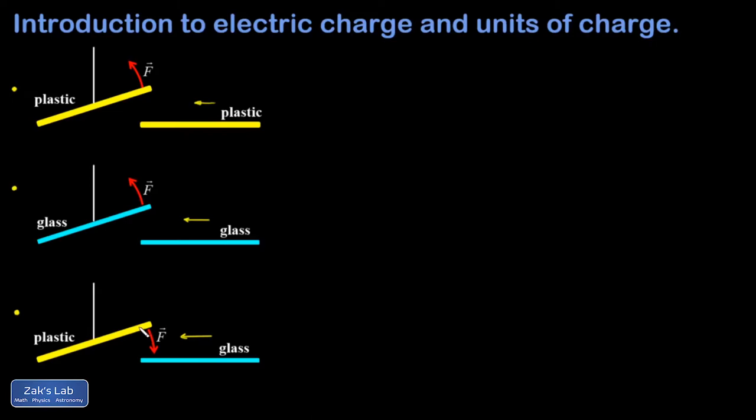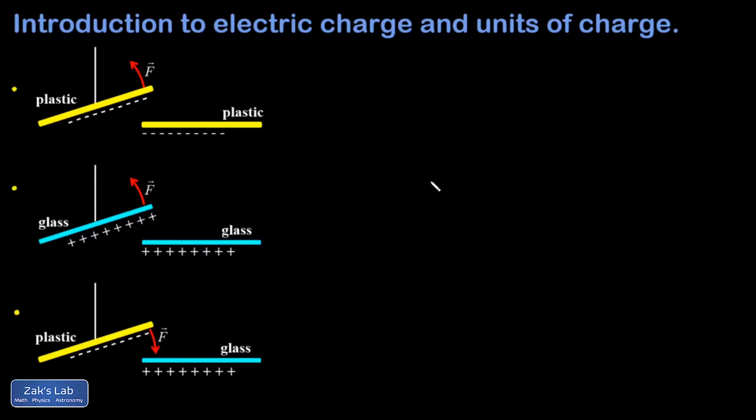The glass would typically be positively charged, and plastic would typically be negatively charged. So when I charge these objects by rubbing, I have like charges repelling in the first picture, like charges repelling in the second picture, and unlike charges attracting in the third picture.